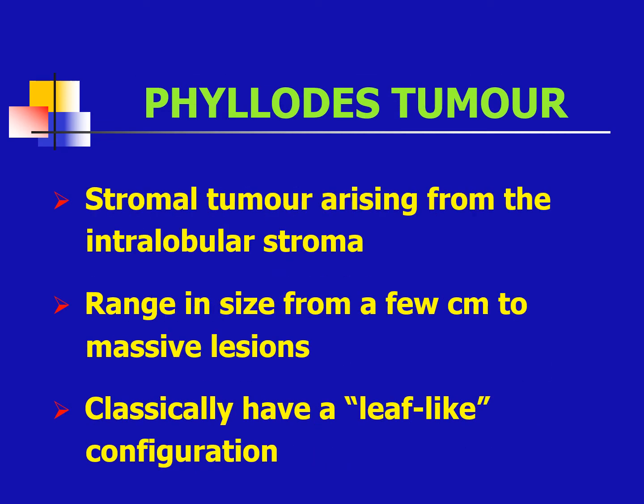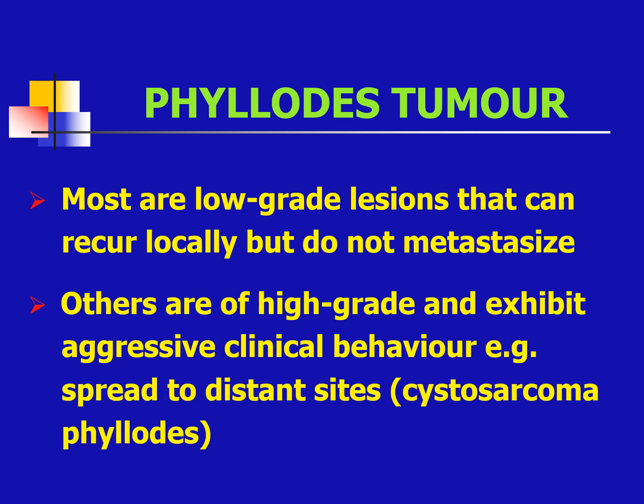A special tumor of the breast is the phyllodes tumor. This is a stromal tumor arising from the intralobular stroma. It can range from a few centimeters to a massive lesion and has a leaf-like configuration. Most are low-grade lesions that recur locally but do not metastasize. Others are of high grade and exhibit aggressive clinical behavior and spread to distant sites — this would be cystosarcoma phyllodes.